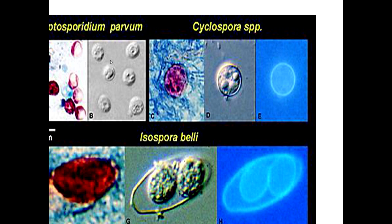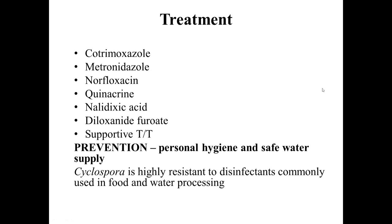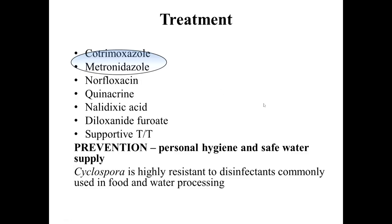Comparing Cryptosporidium parvum with Cyclospora, Cryptosporidium is smaller while Cyclospora is bigger. Trichrome staining, safranine with formalin giving red-colored structures, can also be used. Treatment is by cotrimoxazole; metronidazole, norfloxacin, quinacrine, nalidixic acid, and diloxanide furoate can also be given, in addition to supportive treatment for dehydration. Prevention is by personal hygiene and safe water supply, as Cyclospora is highly resistant to disinfectants commonly used in food and water processing. The main treatments are cotrimoxazole and metronidazole.